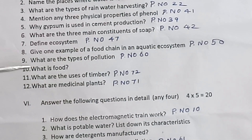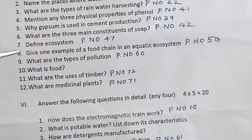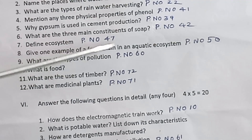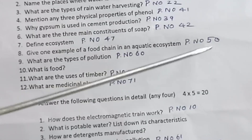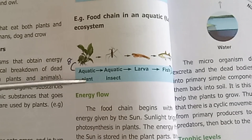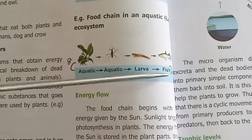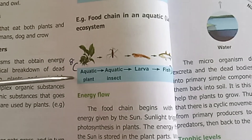Eighth one: Give one example of a food chain in an aquatic ecosystem. Page number 50. Aquatic plant → Aquatic insect → Larva → Fish.